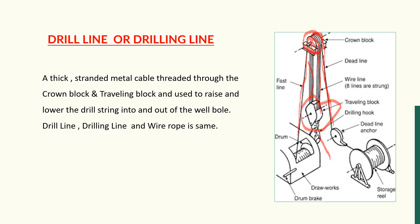The function of the drill line is to raise and lower the drill string. The drill line is threaded through the sheaves of the crown block and traveling block around six to twelve times. Generally, the length of the drill line is around 1,000 feet, though it may be more or less depending on the drilling requirement of the well program.